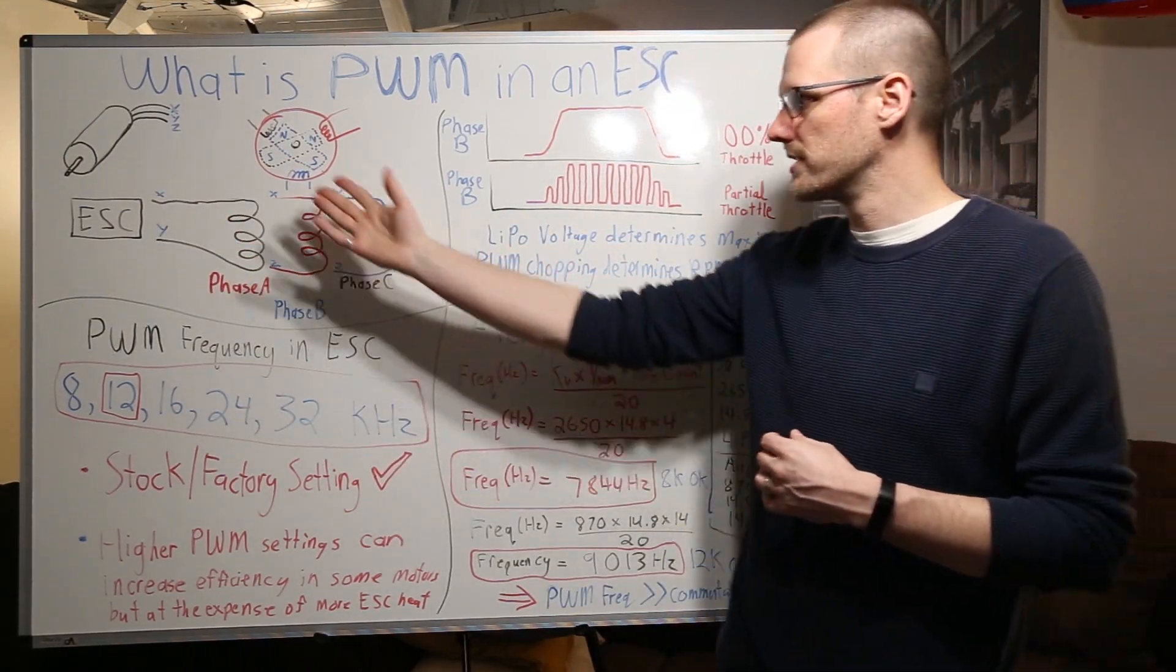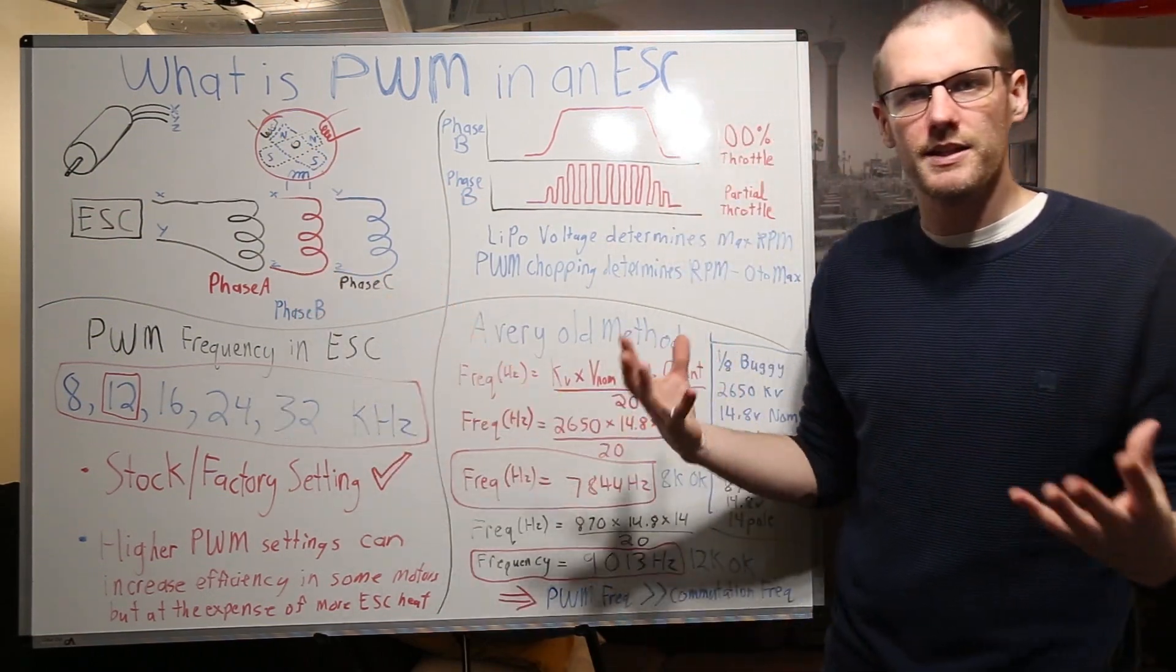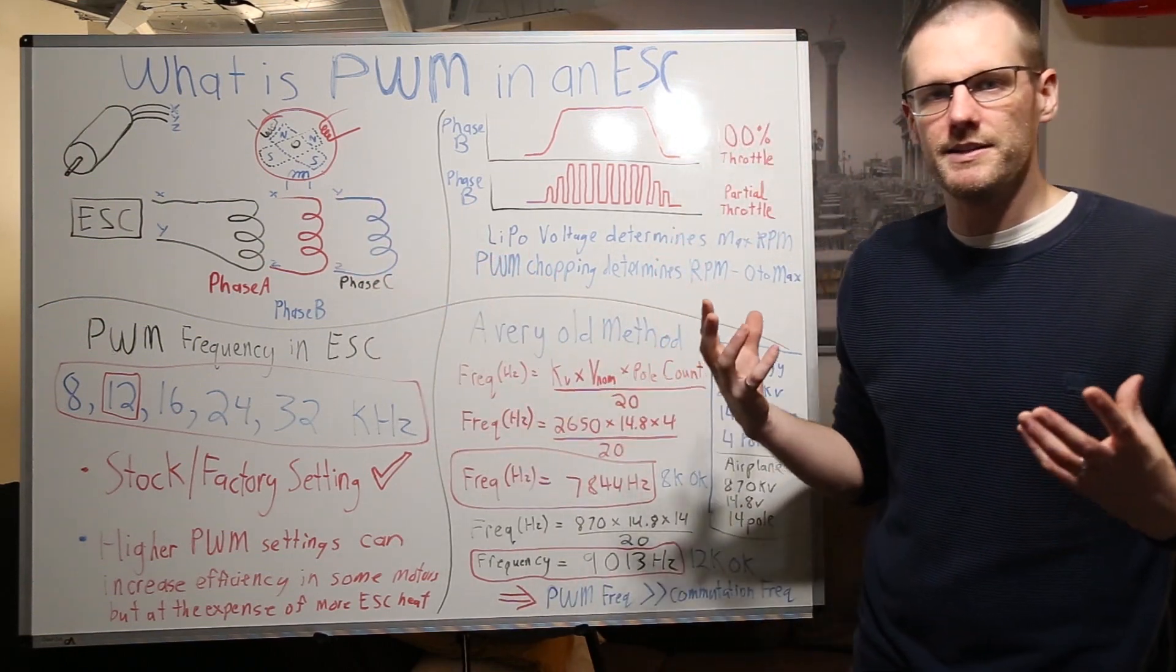So if you go ahead and take X and Y, you are producing phase A. This is just what we're calling it for today. If you take X and Z, you get phase B, and then you take the last remaining that we haven't covered yet, Y and Z, and you get phase C.